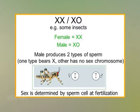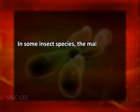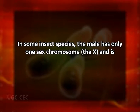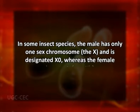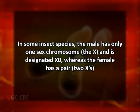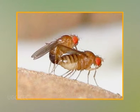Another mechanism of sex determination involving sex chromosomes is the X0 system that operates in many insects. In some insect species, the male has only one X chromosome and is designated X0, whereas the female has a pair. In other insect species, such as Drosophila melanogaster, the male is XY. For both types of insect species, the ratio between X chromosomes and the number of autosomes determines sex.